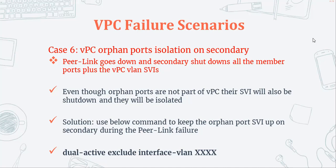In VPC, when the peer link goes down and the VPC secondary device learns via the VPC peer keep-alive link that the primary device is still alive, it will take a decision: it is going to shut down all the member ports plus the SVIs — the VPC VLAN SVIs. So the solution to this situation is to use the command: 'dual active exclude interface vlan' followed by the VLAN number. We'll see this with a practical demonstration.